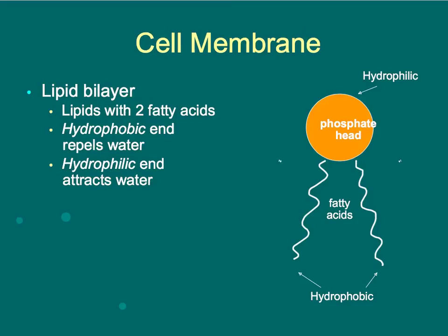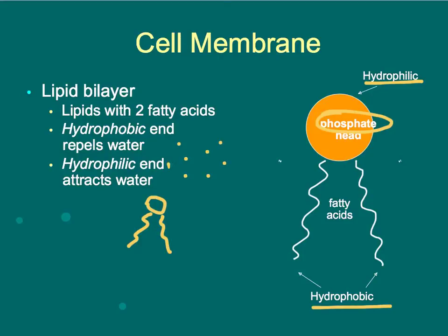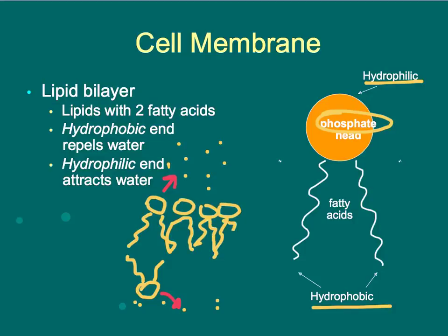We also discussed the lipid bilayer, which is made out of lipids — types of fats, waxes, or oils. This is a phospholipid bilayer because it contains a phosphate molecule on the head, and that's what makes it hydrophilic, meaning it's attracted to water. The fatty acid tails are hydrophobic and repel water. The hydrophobic tails point toward each other to avoid water, and the hydrophilic heads point toward the water, creating a barrier through which no water can pass.